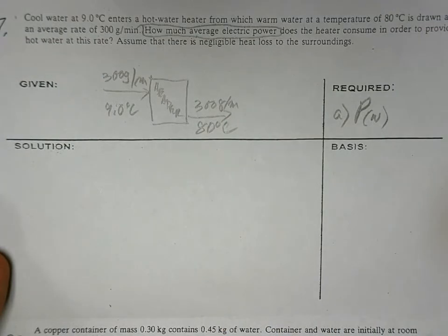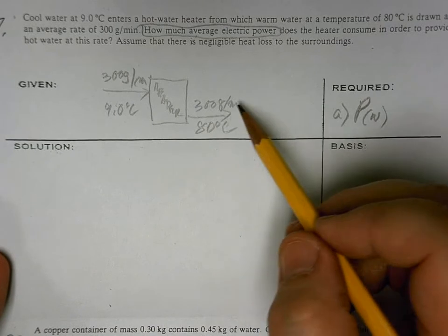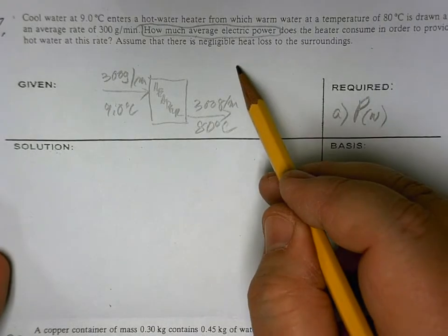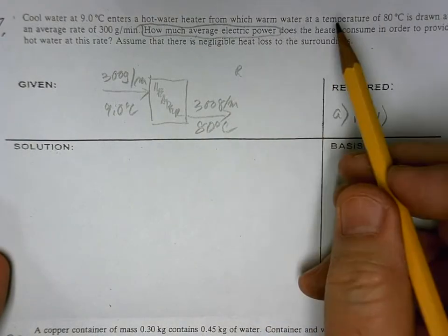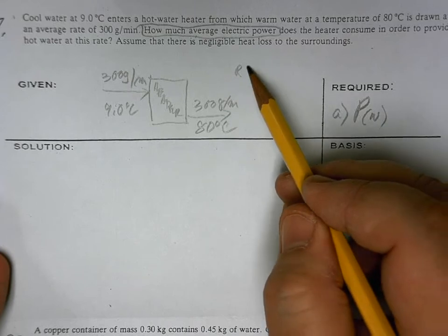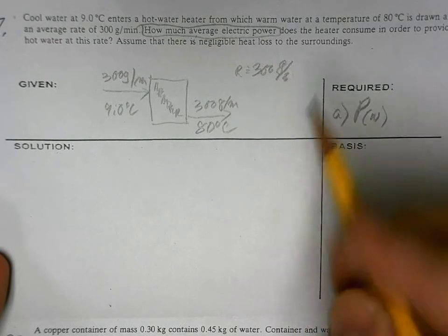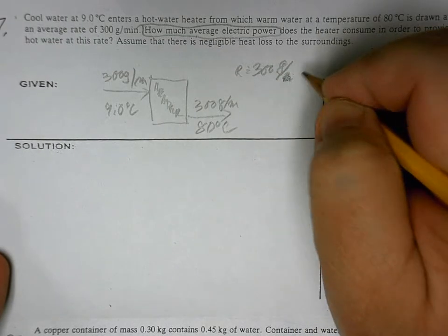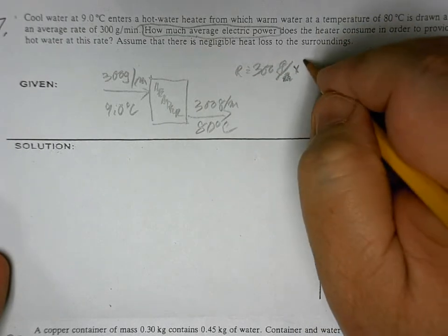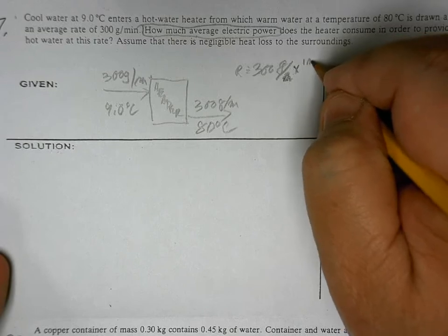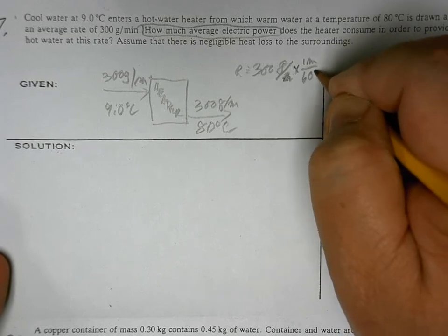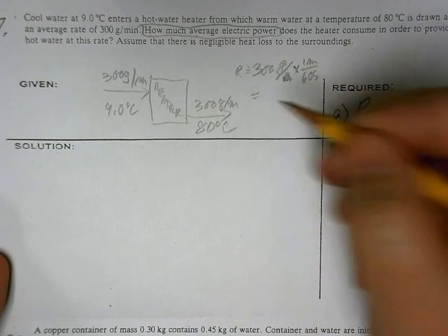Now what you want to do is change the rate to per second. So the rate is 300 grams per minute, you multiply that by one minute over 60 seconds.